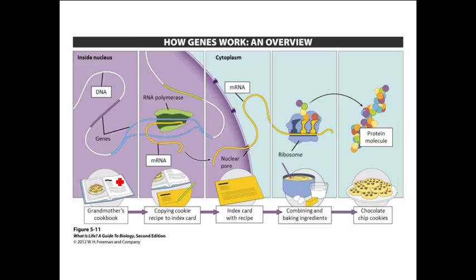The DNA needs to stay protected, so it stays in the nucleus where it can be protected — because that's the single copy of the information the gene has. The mRNA is like the index card: it's a copy of the information in the grandmother's cookbook, and it can be taken into the kitchen where it hooks up with a chef, which is like a ribosome. You could think of the ribosome as a tiny chef making the recipe, and the amino acids would be all of the ingredients.